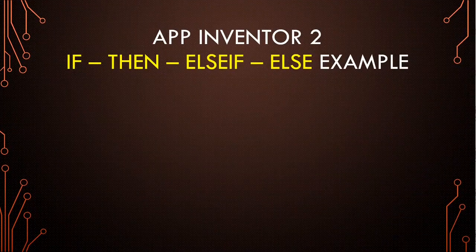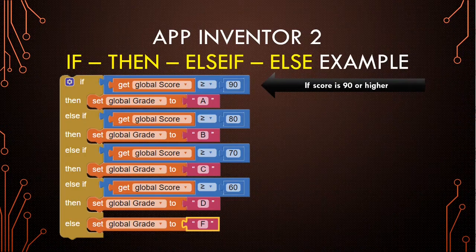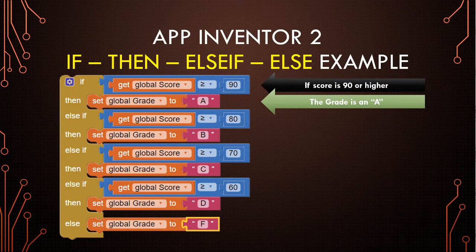Let's look at an if-then-else-if-else example. Don't get too worried — there are a lot of blocks here, but if we take it step-by-step, you can see it's just repetition of the same thing for different conditions. Starting at the top, my first test next to the if says: if the score is greater than or equal to 90, then I'm going to set my grade variable to an A. So if you get 90% or higher, you're going to get an A. If it's not greater than or equal to 90%, it skips the then part and goes down to the next else-if.